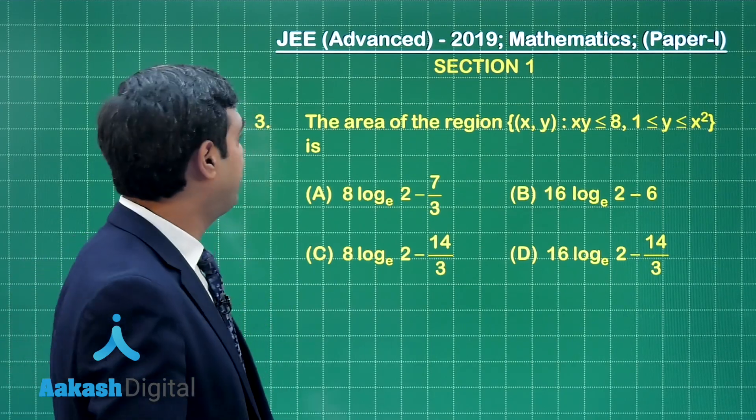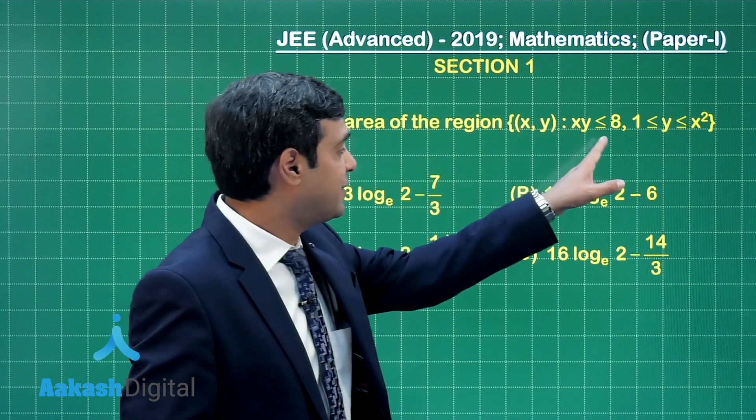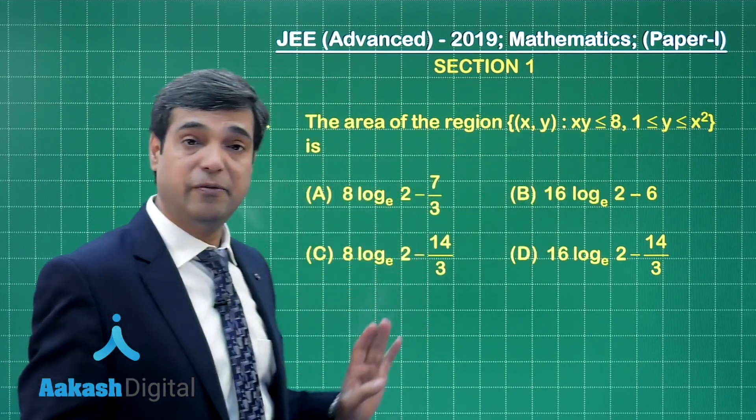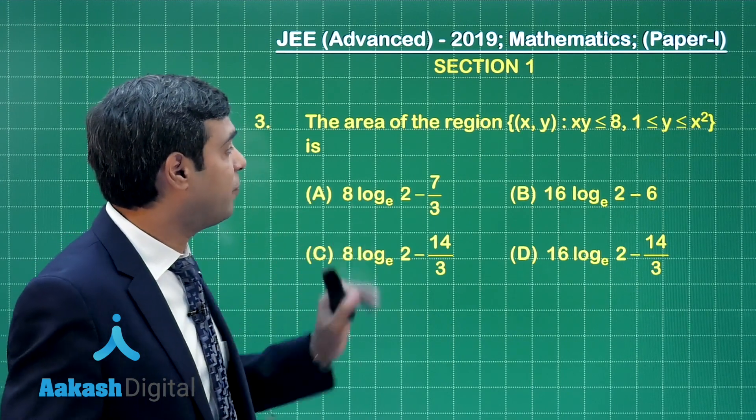So, let us take third question of section 1. The area of the region given as xy less than equal to 8, y is between 1 and x square. So, let us first plan the figure for these curves.